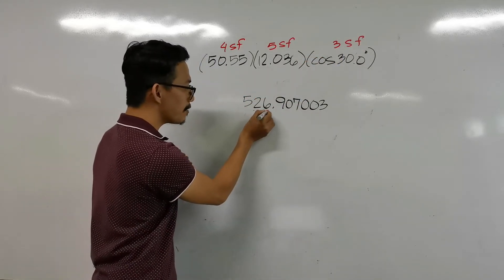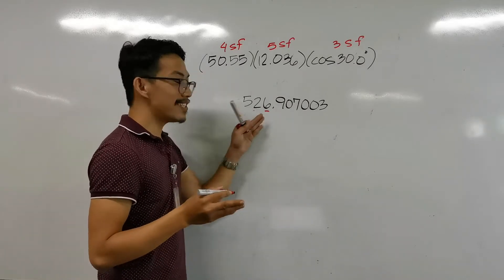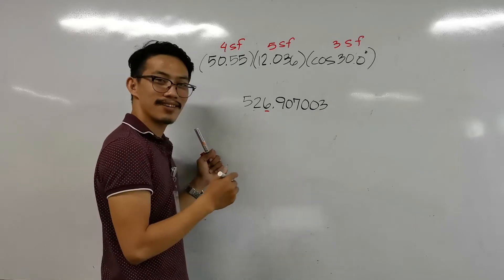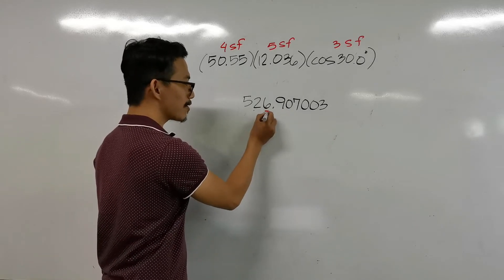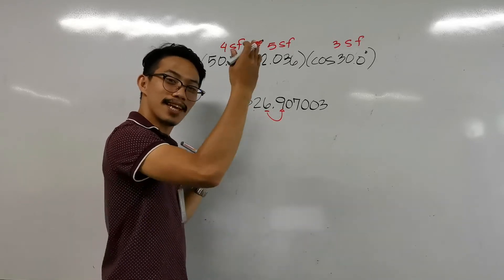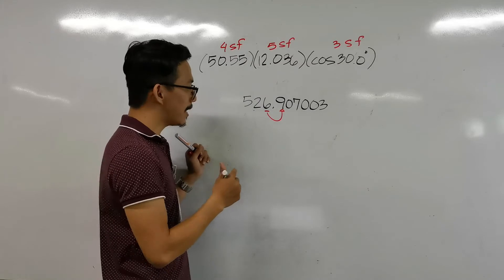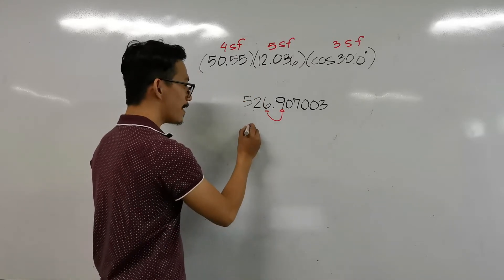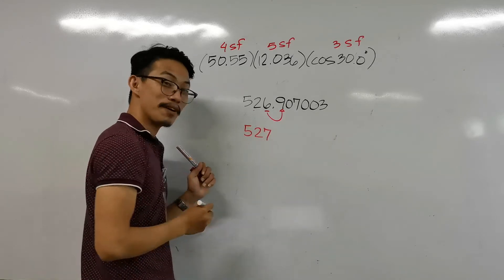Counting 1, 2, 3 — that means our answer must go up to the digit 6, since that gives us 3 significant figures. Take note of the number next to 6, which is 9. Since 9 is greater than 5, we round up. So our final answer will be 527.